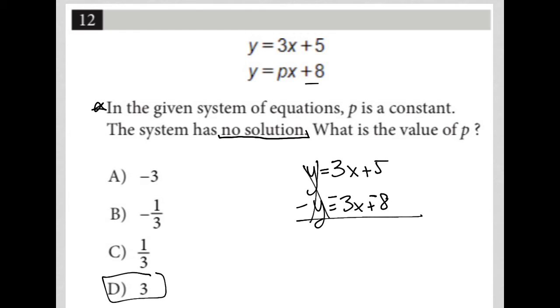In doing so, my Ys cross out, so this is a zero, equals my Xs cross out because three X minus three X is nothing. And five minus eight is negative three.